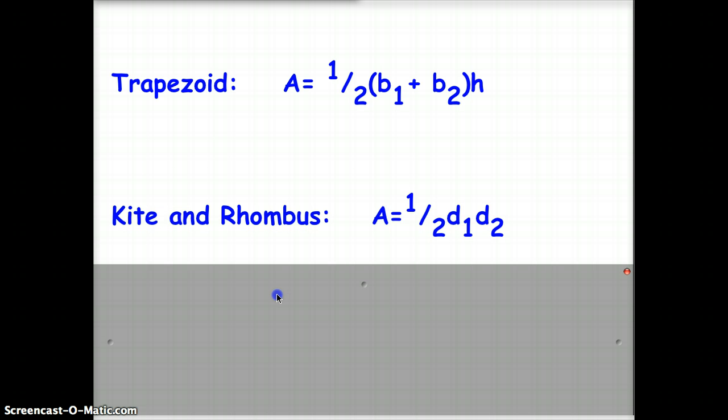For kites and rhombi, or rhombuses, your area is half diagonal 1 times diagonal 2.